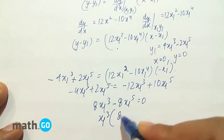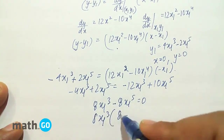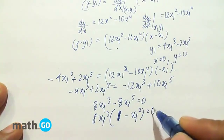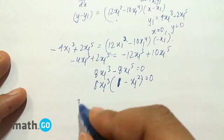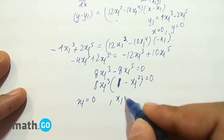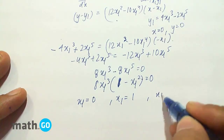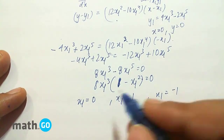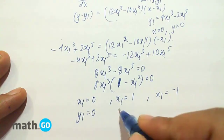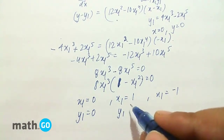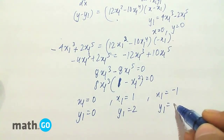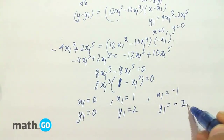Factoring out x1 cubed and 8, we get 1 minus x1 squared equals 0. This gives x1 equals 0, x1 equals 1, and x1 equals minus 1. The corresponding y1 values are y1 equals 0, y1 equals 2, and y1 equals minus 2.